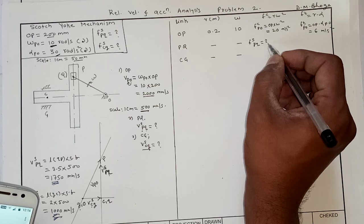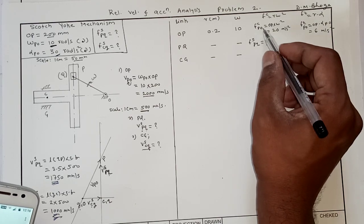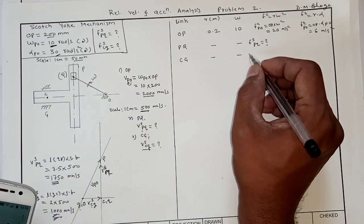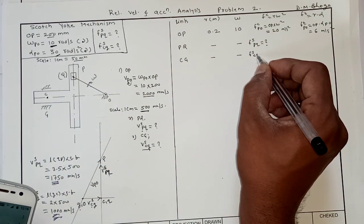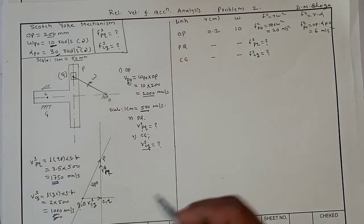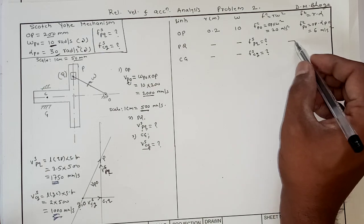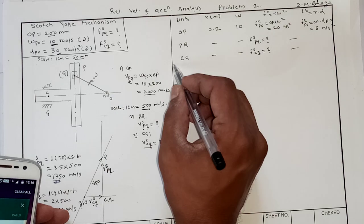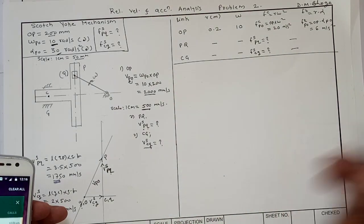Sliding acceleration of P relative to Q is unknown. It does not have centripetal or tangential components because it is not rotating. Similarly, slider C slides with respect to G, so it will have only sliding acceleration FS_CG, which is also unknown.